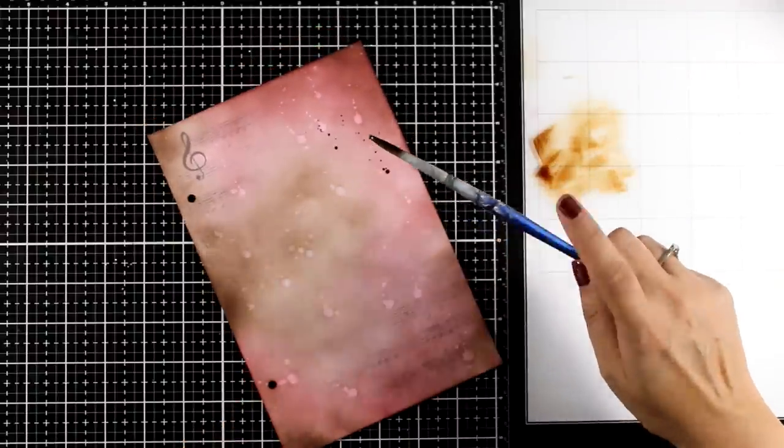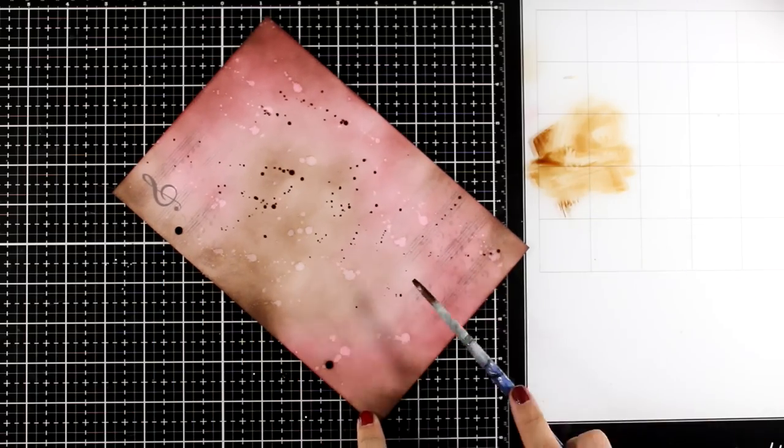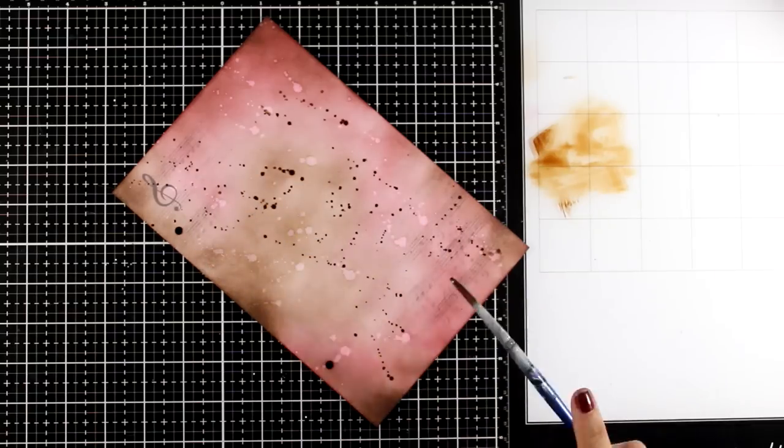Now I'm also going to add some brown splashes. Again, I just swiped my coffee dye ink on top of my glass and with a little bit of water, it's super easy to do.